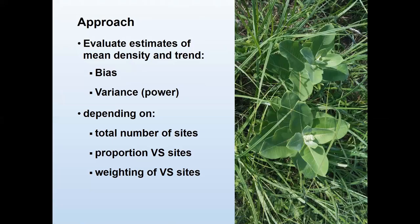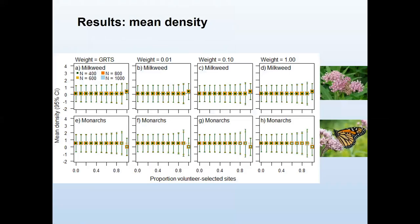With this approach, we're evaluating what happens under different scenarios — varying the proportion of volunteer-selected sites — in terms of whether your estimate of density or trends is biased, whether you can improve precision and reduce variance, and therefore maximize your power to detect trends. Our hope is to find some balance where we can utilize volunteer-selected sites, get an unbiased density estimate with good precision, and get an unbiased trend estimate with good precision. We're varying total number of sites, proportion that are volunteer-selected, and how we're weighting them.